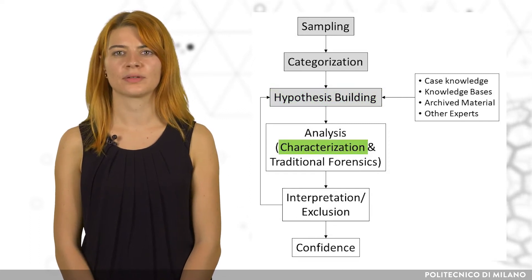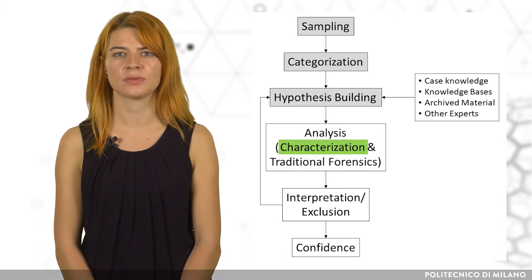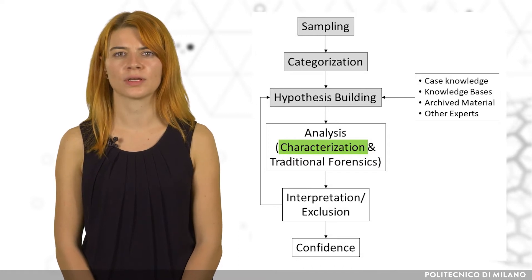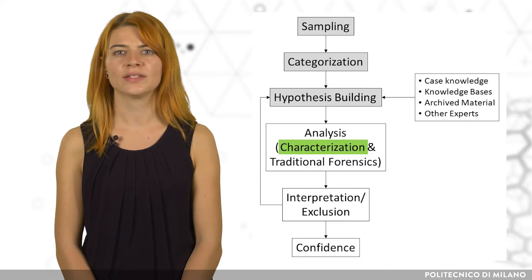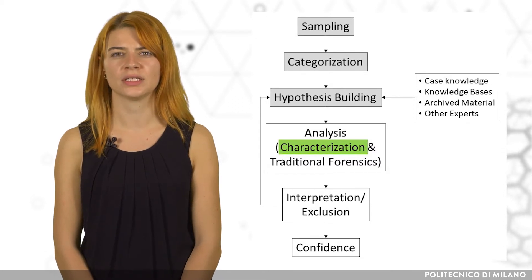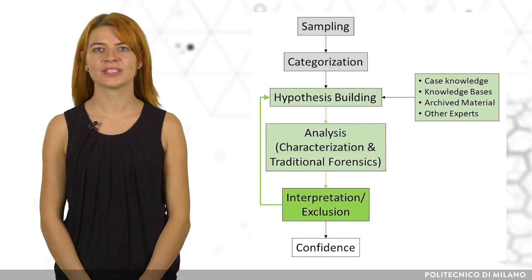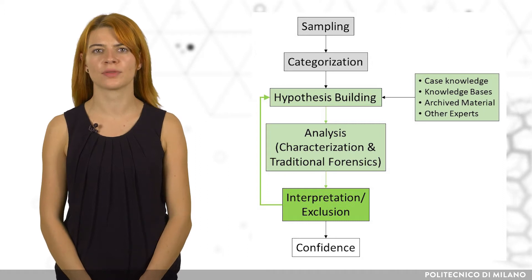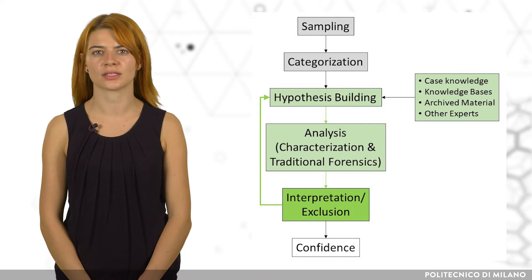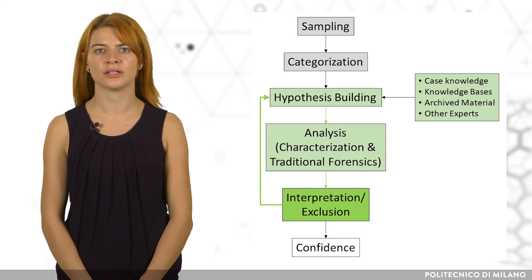This is followed by the characterization of the material — a more thorough analysis to determine the nature of the radioactivity and associated non-nuclear evidence. Radiochemical, physical, and chemical analysis methods are used. The interpretation of the results is an iterative process, and often the first hypothesis about the origin and intended use of the sample is rejected or adjusted due to new analytical results.